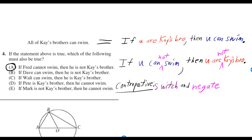So if you switch it, you go from if you are K's bro, then you can swim to if you can swim, then you are K's bro. But then if you also negate that, you get if you cannot swim, then you are not K's bro.